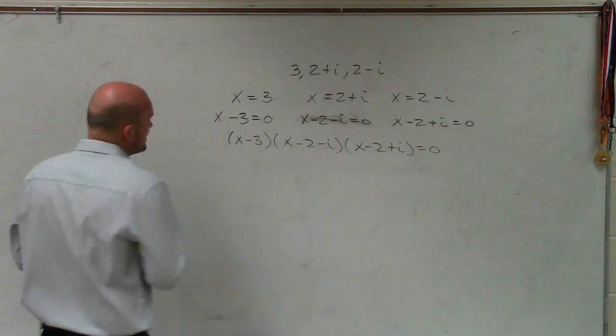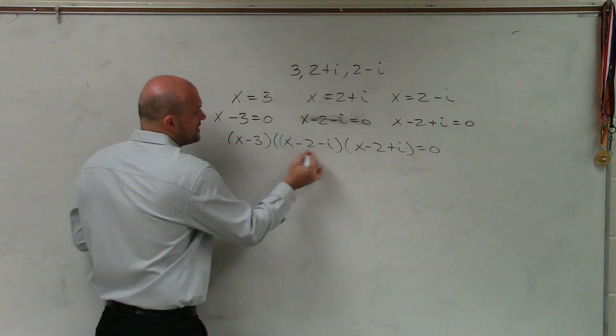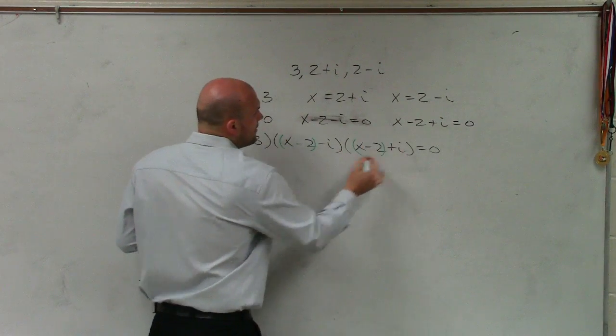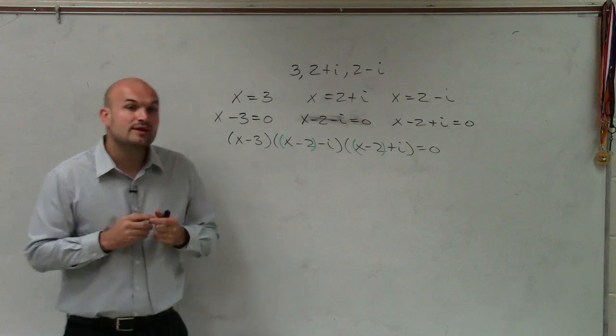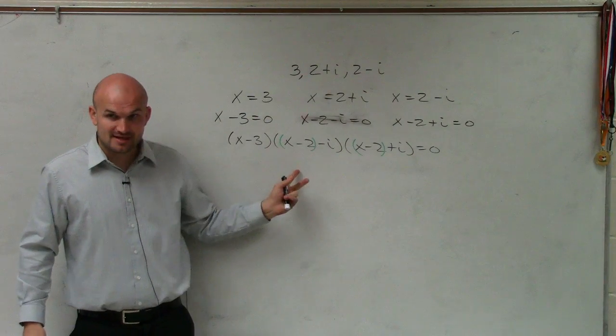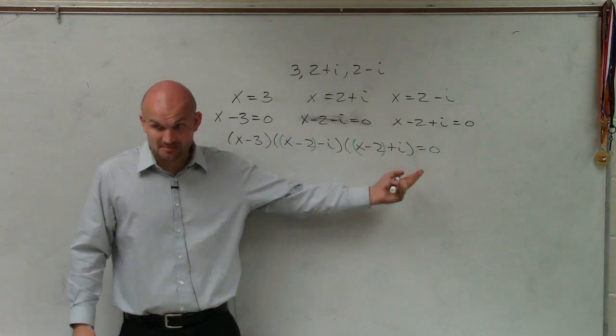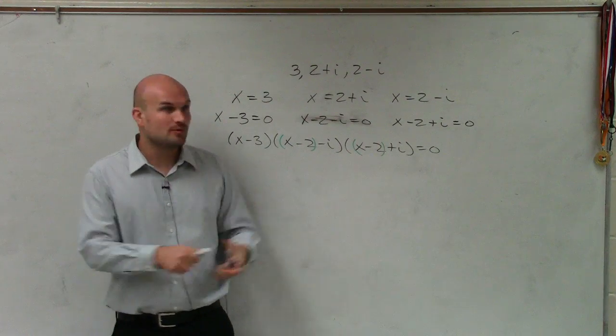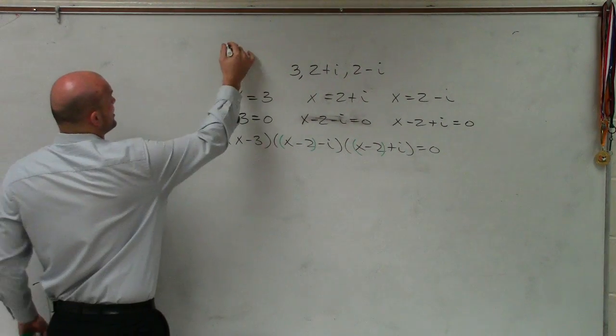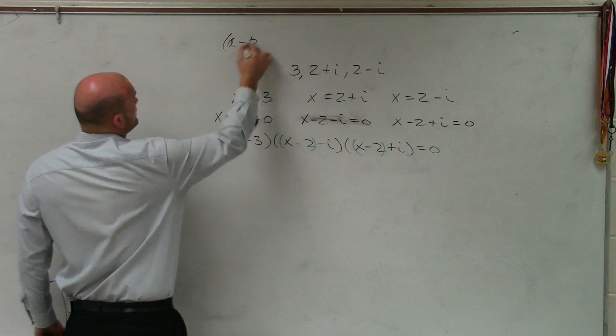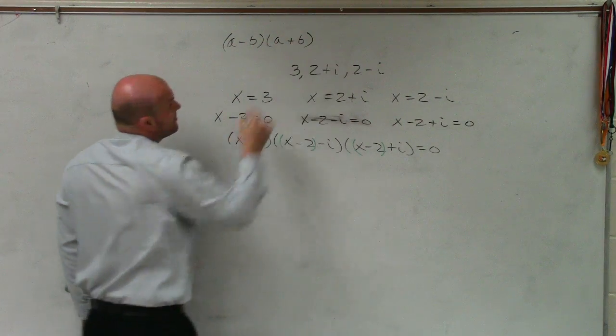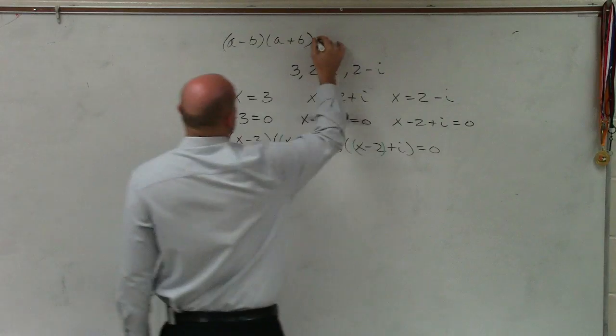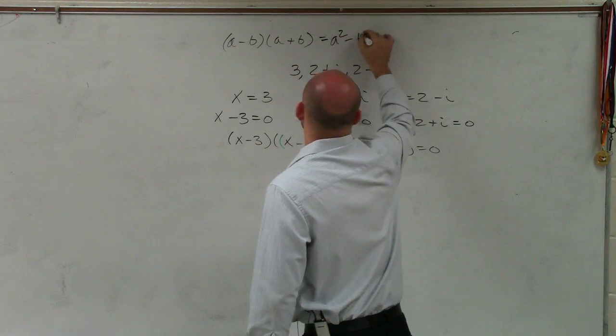However, the technique that I showed you guys that I think makes this much easier is, if we group the first two terms together, we notice that these two terms are exactly the same, as well as the second two terms are exactly the same, except one's subtraction and one's addition. Therefore, when you have two terms that are exactly the same, but one's subtraction and one's addition, then that goes back to what we call the difference of two squares.